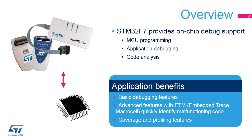The debug interface of STM32 products provides access to MCU internal resources. This interface is used to program the MCU and debug applications using basic debug features. In addition to the basic debugging features, applications benefit from the trace capability used to quickly identify possible malfunctioning parts of the application and to create coverage and profiling reports used for application tests, optimizations, and certifications.